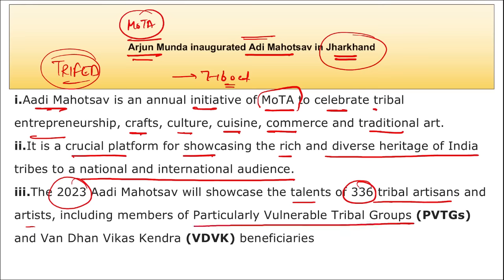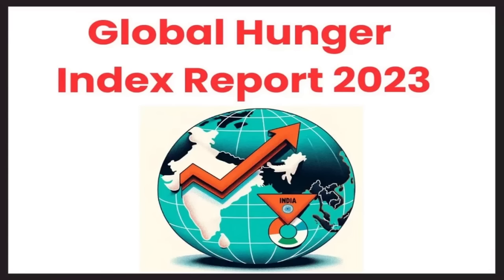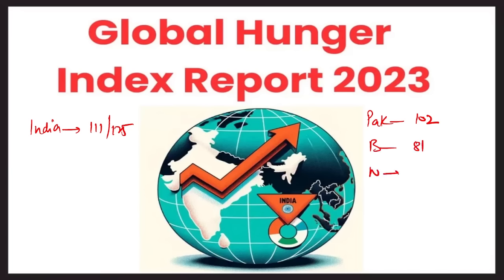Next, Global Hunger Index Report 2023 — an important report. India ranked 111 out of 125 in the Global Hunger Index report. India slipped four positions compared to the previous ranking and has the highest child wasting rate of almost 18.7% in the world, reflecting acute undernutrition. Neighboring country rankings: Pakistan is 102, Bangladesh is 81, Nepal is 69, Sri Lanka is 60. The first Global Hunger Index report was published in 2006.